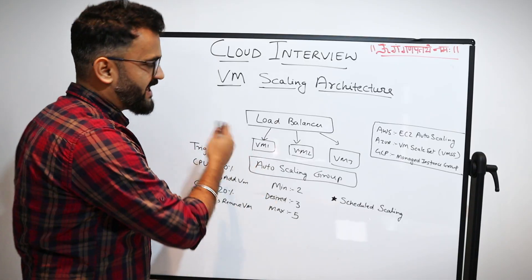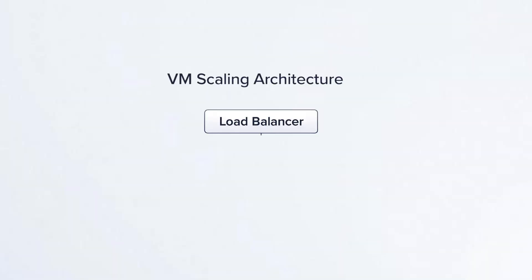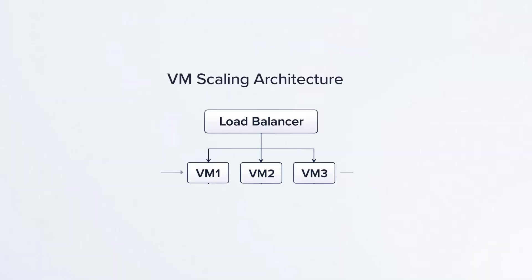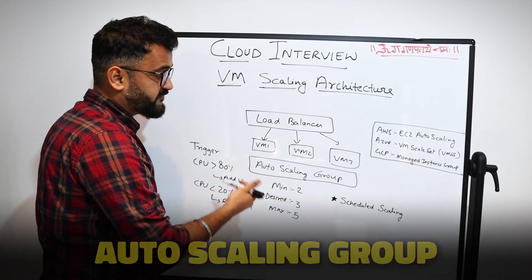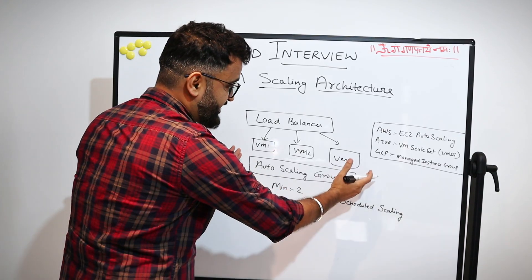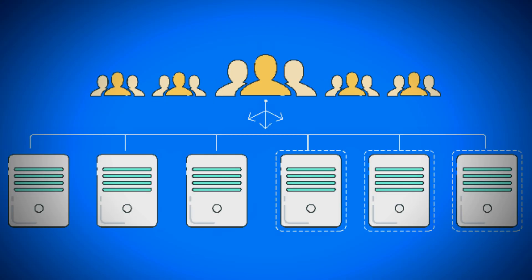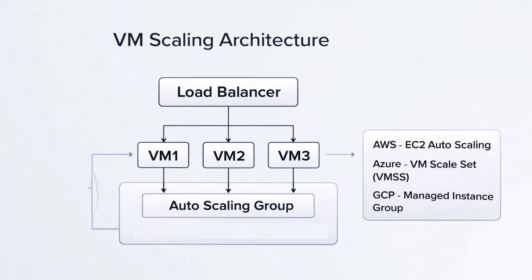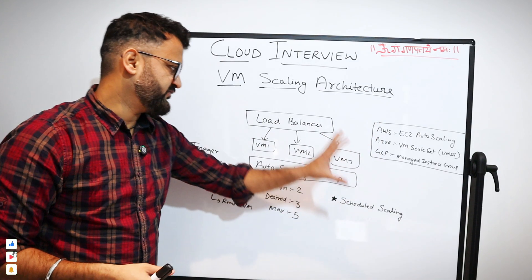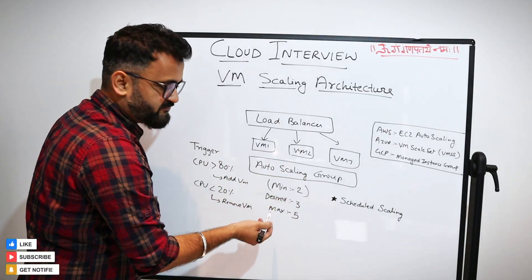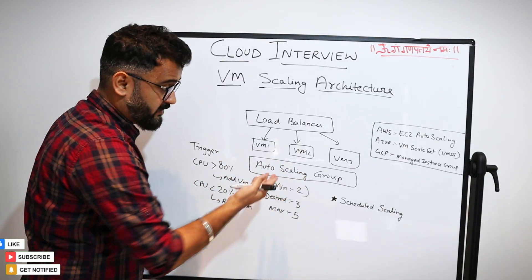Generally, you will have a load balancer distributing load to, for example, three virtual machines. In cloud, you have the concept of an auto scaling group — you define how to scale or descale that group based on requests from the load balancer. In AWS this is called EC2 Auto Scaling, in Azure it's called VM Scale Set (VMSS), and in GCP it's called Managed Instance Group (MIG) — same concept, different names.